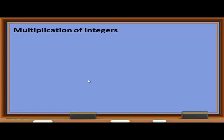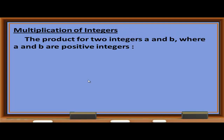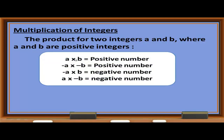Multiplication of integers: The product of two positive integers A and B is a positive number. Positive times positive is positive. A times negative B gives a negative result. Negative times negative is always positive. These rules should be recalled.